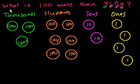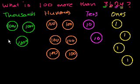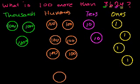So what is the question? What is 100 more than 3,624? We're essentially going to add 100 to this representation. How do we add 100? We're going to add 1 to the 100s place — add a group of 100 right there. So now, how many 100s do I have? 1, 2, 3, 4, 5, 6, 7. Or 100, 200, 300, 400, 500, 600, 700.